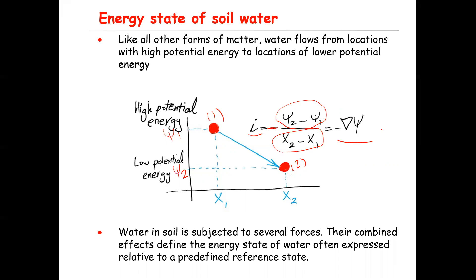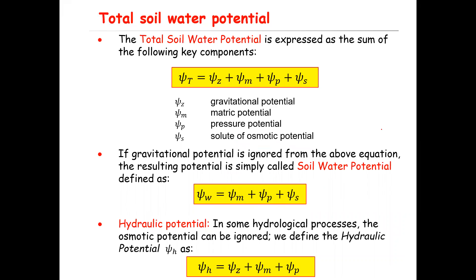Water in soil is subjected to several forces, and the combined effect of these forces defines the energy state of the water. The total soil water potential is expressed as the sum of four key components: psi z plus psi m plus psi p plus psi s, where psi t is the total soil water potential.